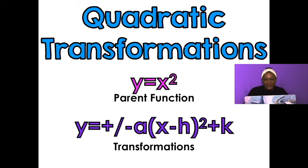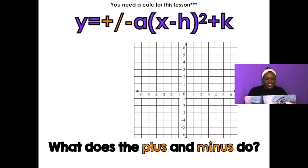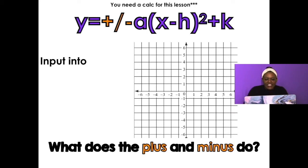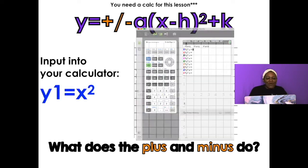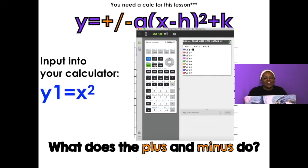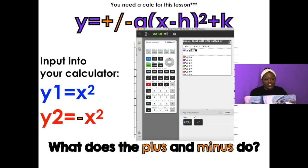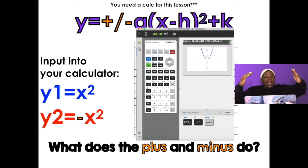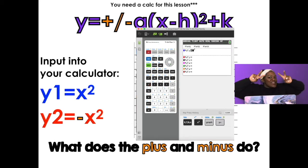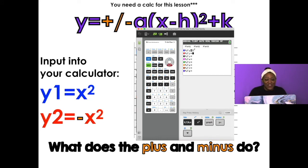Let's get started. Input into your calculator — your TI SmartView preferably — to see what different parts of the equation do to the graph. In Y1, put in the parent function, which is x squared. In the Y2 box, put in negative x squared. The only thing I'm changing from the parent to what I call the child is a negative in front of the function.